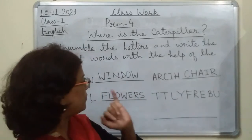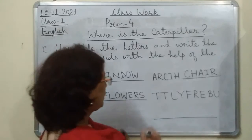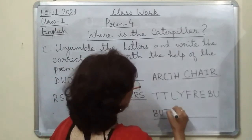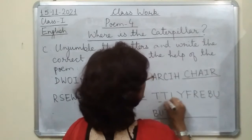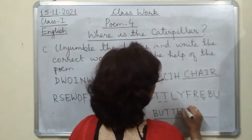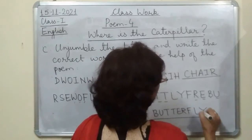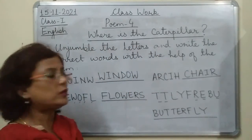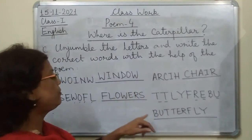And the last word — I am sure you can make it out, there is a double T. The letters are B, U, T, T, E, R, F, L, Y — 'butterfly.' The words are: window, chair, flowers, and butterfly.